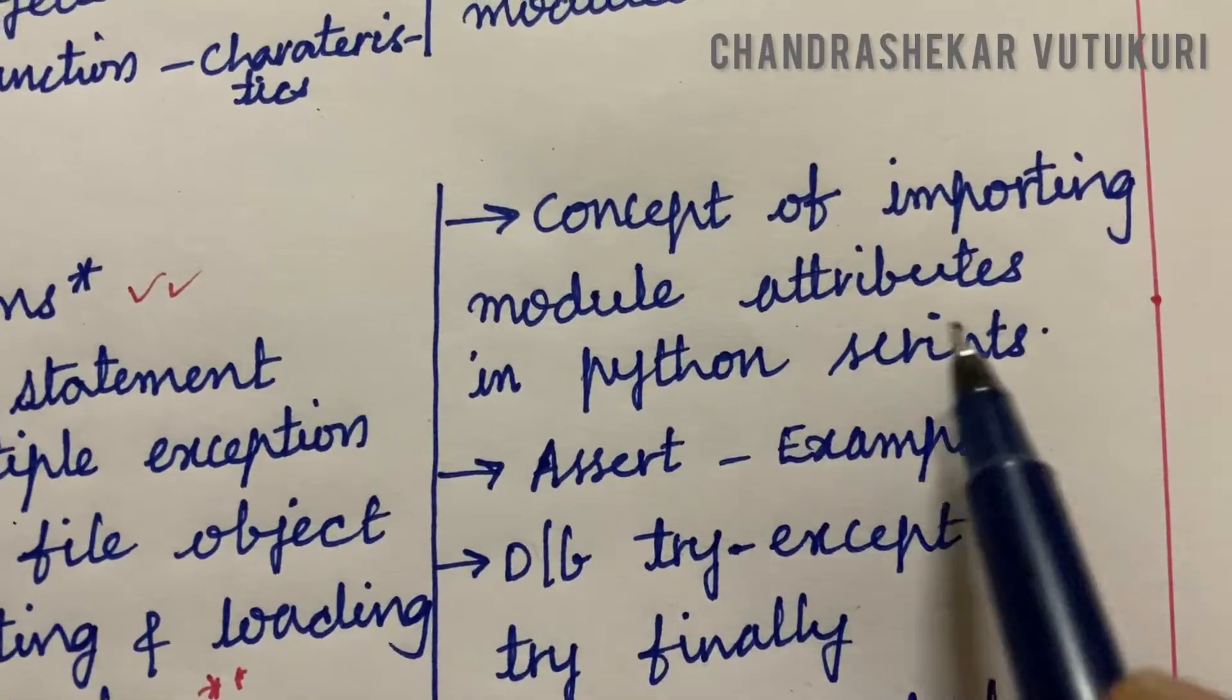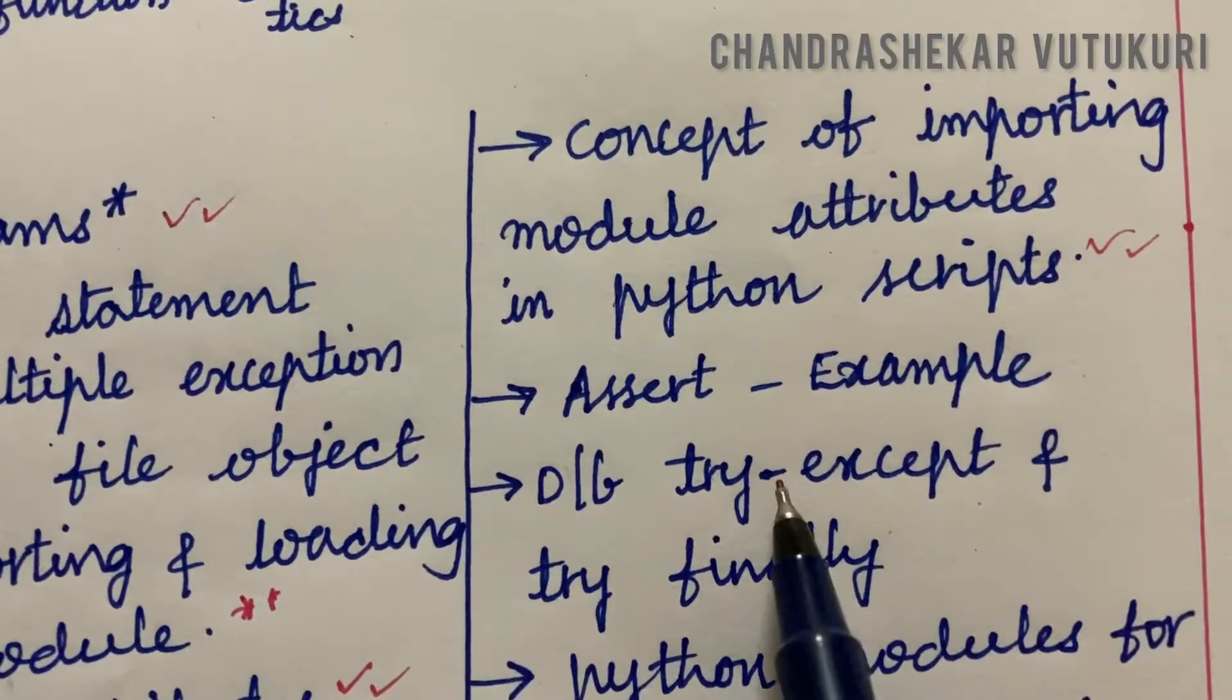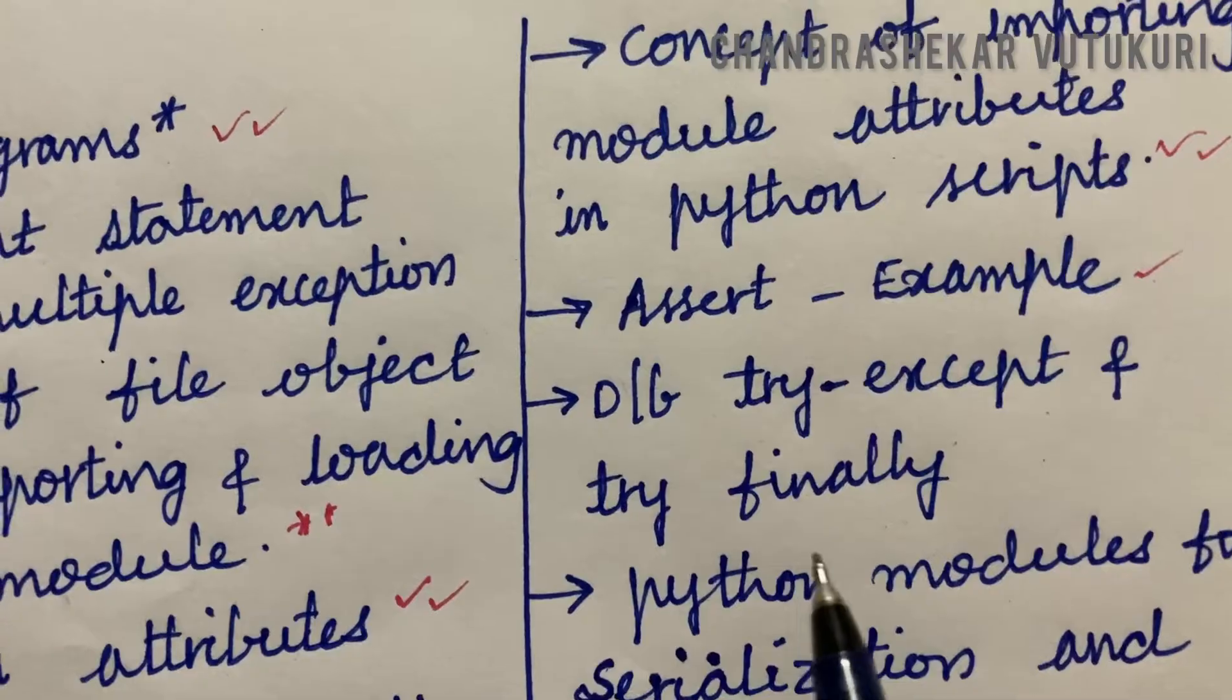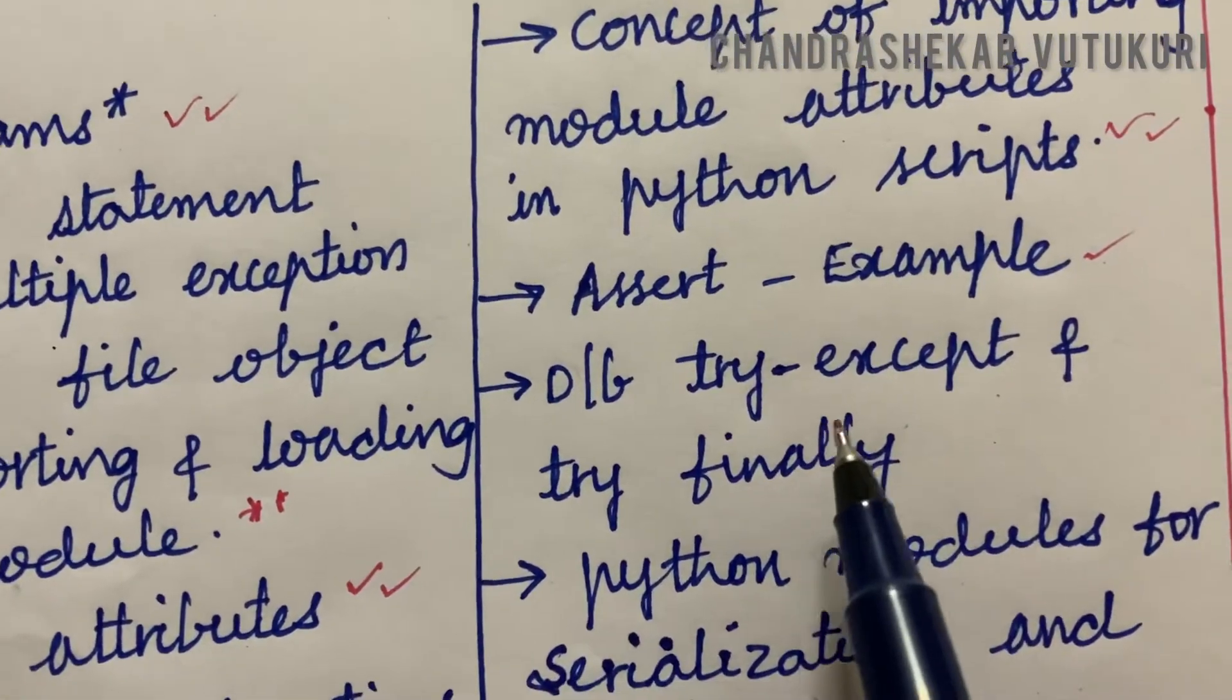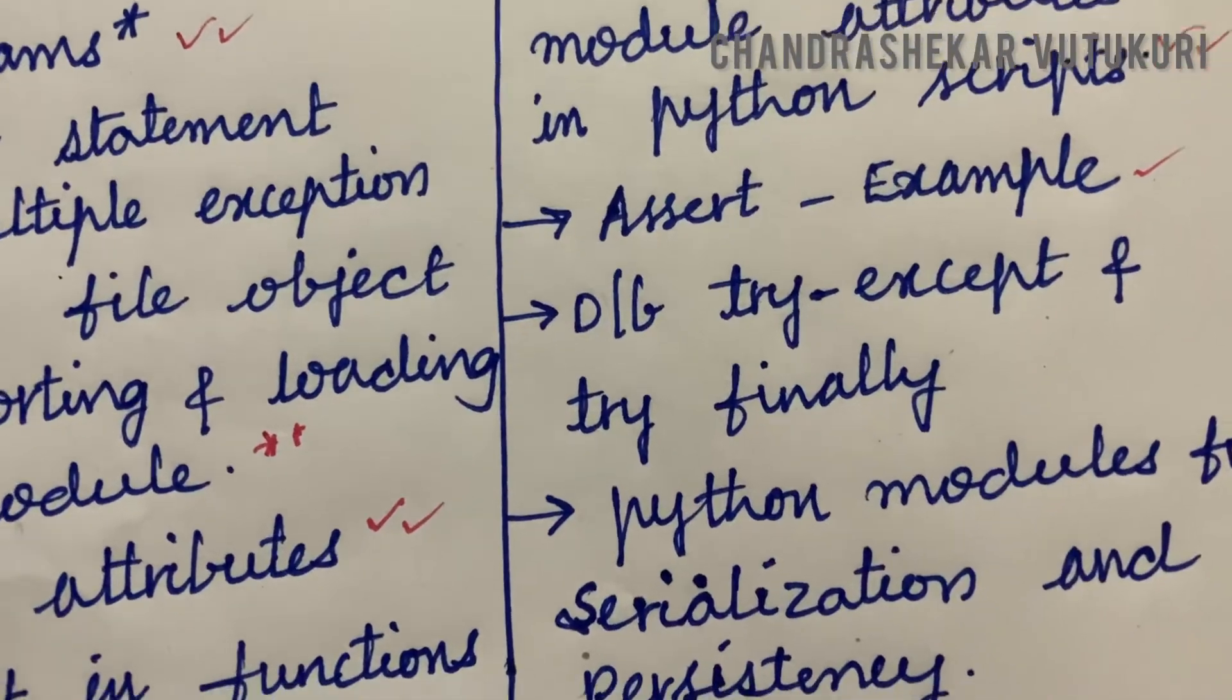Later, the concept of importing module attributes in Python scripts may be the long question. The assert with example is also said to be a three-mark question if asked from Unit 2. The difference between try-except and try-finally may also be a five-mark question in Part B.